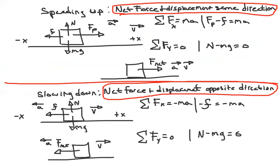You already know information from the words given to you. If a problem says a box is speeding up to the right, you know the net force is in the same direction as displacement. If it says the object is slowing down, you know the net force is opposite the direction of motion — no calculation needed.